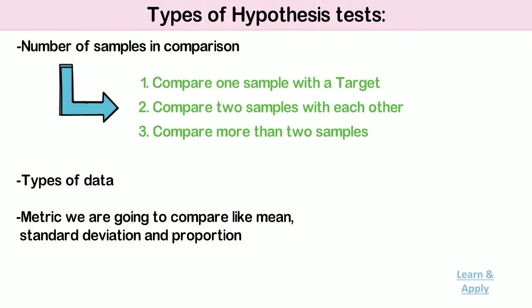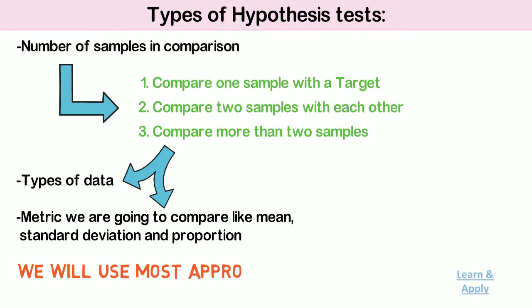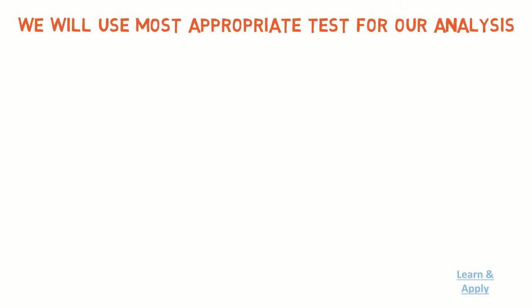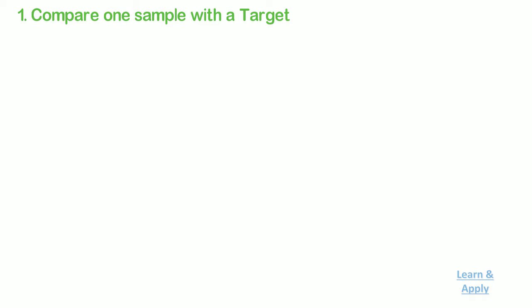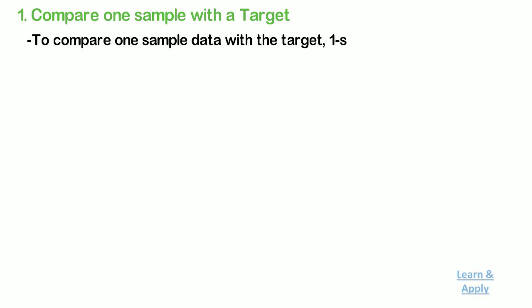Let's understand the selection criteria for each of these tests based on type of data and different metrics. Based on this, we will use the most appropriate test for our analysis. The first type is: compare one sample with a target. If you want to compare one sample of data with a target, then one-sample hypothesis tests are used for it.